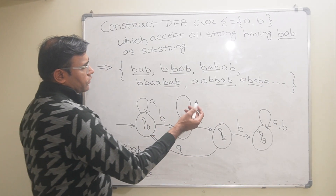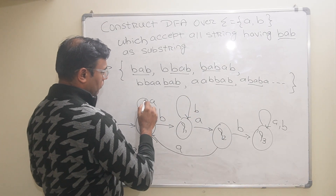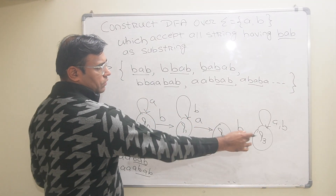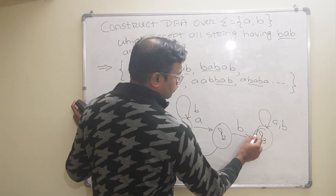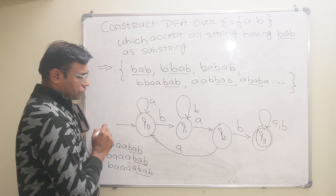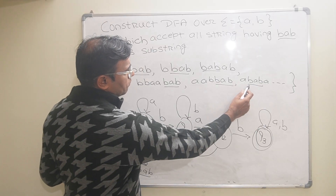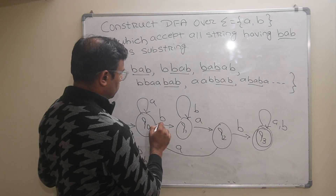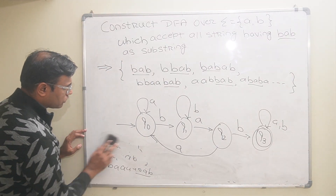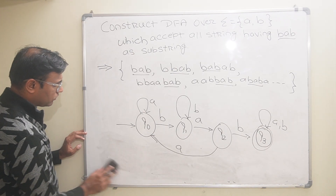If we trace any of these possibilities — for example, a string with double A and double B then BAB — we reach the final state. So Q3 will be the final state. All the possibilities are covered, and Q3 is the final state that accepts all valid strings.